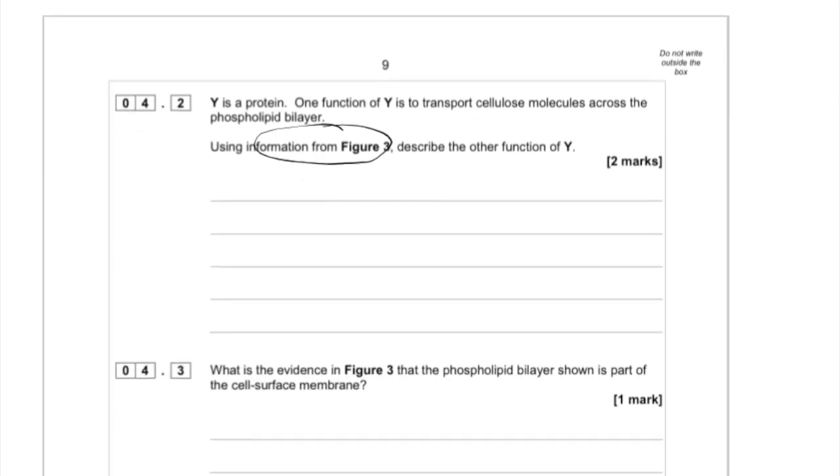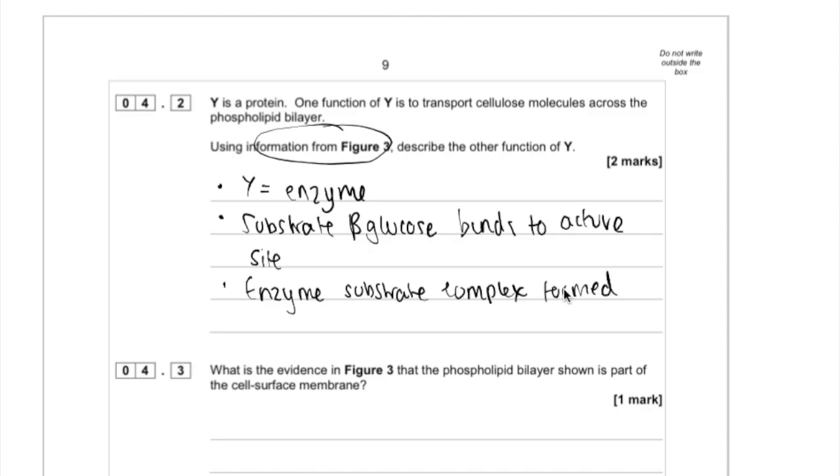So how are we going to write our answer? So you can see there, the best way is just to bullet point out your answer so you know you've got enough points. We said that it's an enzyme, that the substrate binds to its active site, forming an enzyme substrate complex, and that joins them. And we've said the type of bond that forms to get our knowledge of biological molecules in there.